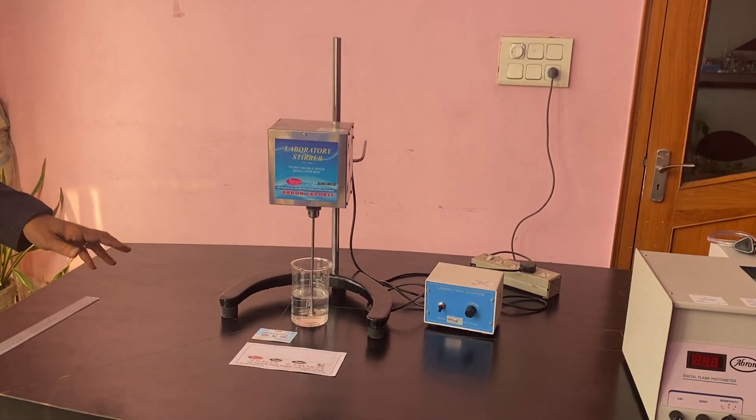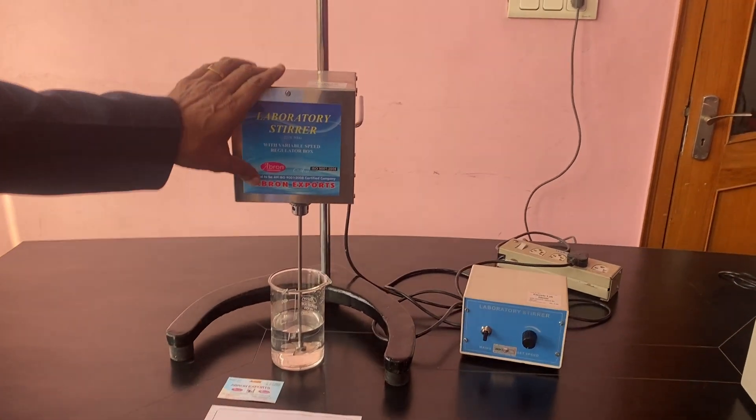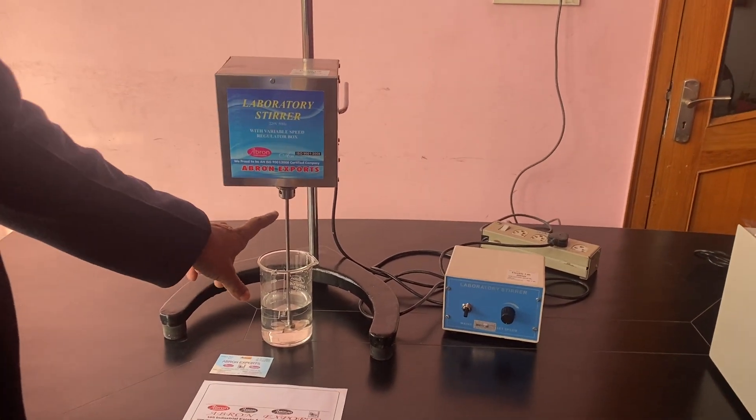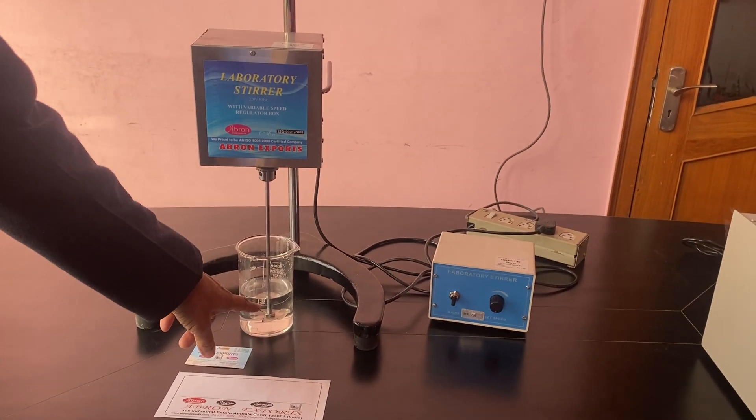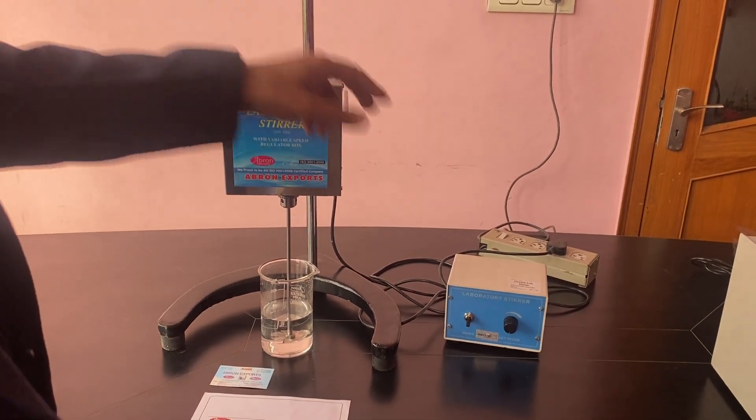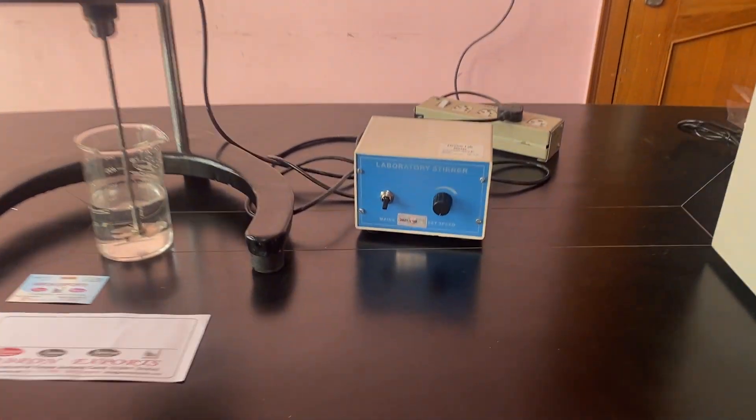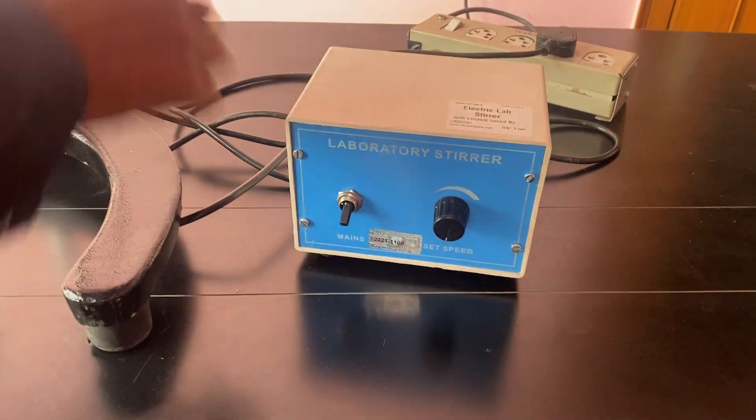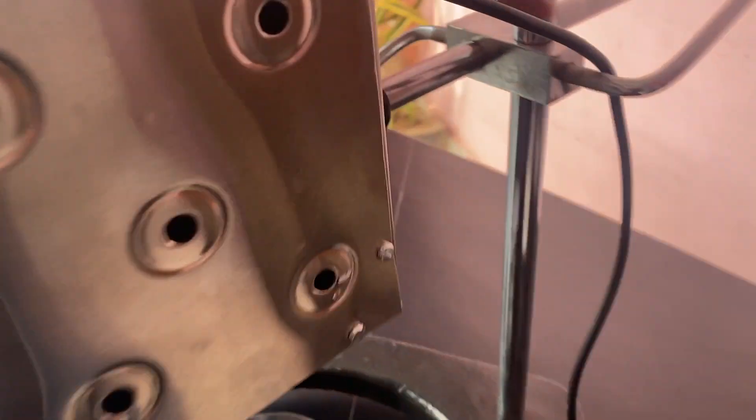This is our laboratory stirrer. It has a chamber, stainless steel box, and stainless steel propeller. This is a speed control box. When you have to start it, there is a clamp for lifting up and down.